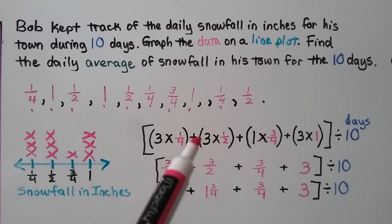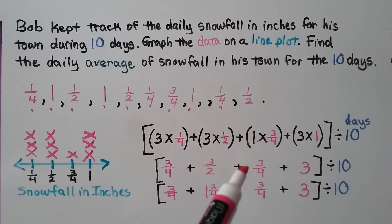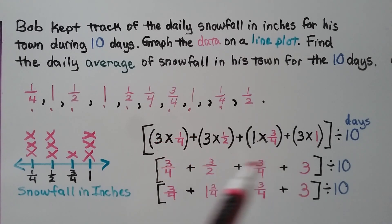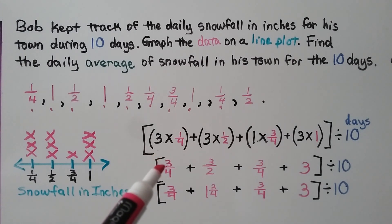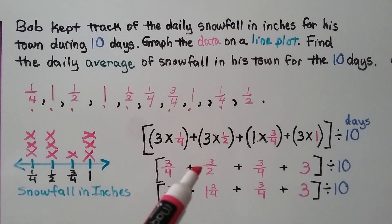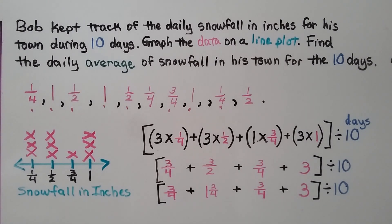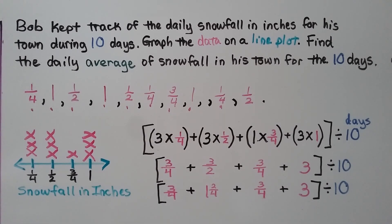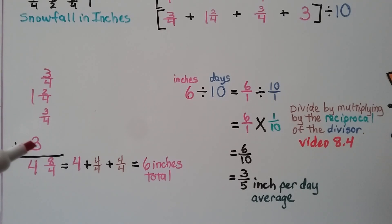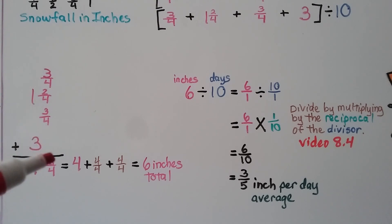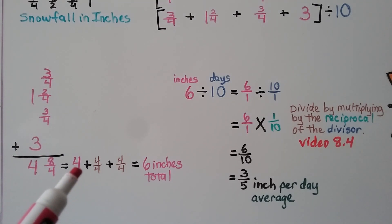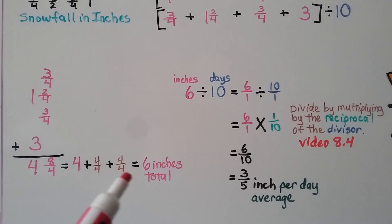Three times one-fourth is three-fourths. Three times one-half is three-halves. One times three-fourths is three-fourths. And three times one is three. We do the parentheses first, then add everything in the brackets with like denominators. Three-halves is the same as one and two-fourths. Adding three-fourths, one and two-fourths, three-fourths, and three whole, we get four and eight-fourths. Four and eight-fourths equals four plus four-fourths plus four-fourths, which equals six inches total.